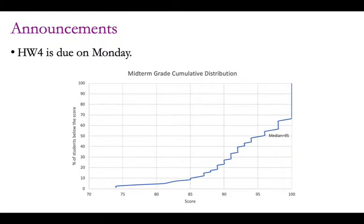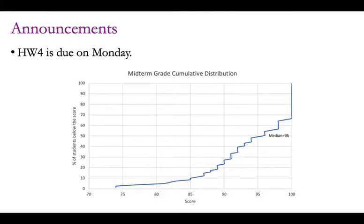Homework 4 is due on Monday, and also the exam grades have been released recently — the exam grades were quite high. The median was 95. Students have asked worriedly whether I'm going to curve down. I said no, so that's good news. I might curve up some grades depending on how the distribution ends up at the end, but I won't know until the class is over. If you're at the bottom and not sure whether to stay in the class, just stop by my office hours tomorrow and we can talk about that.